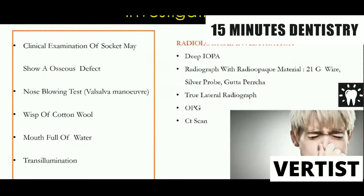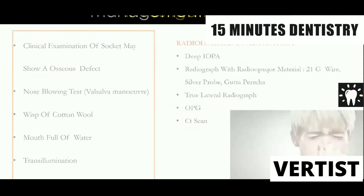How do you investigate this? On clinical examination, we look at the socket — there can be an osseous defect visible to the naked eye. Tests include the nose-blowing test, wisp of cotton-wool test, giving the patient a mouthful of water and asking them to rinse (which will come out through the nostril), and transillumination test. Radiographs include PA view, IOPA with beta-pack technique, lateral radiograph, OPG, CT scan, and in cases of chronic oro-antral fistula, a paranasal sinus view — Water's view — which will show chronic maxillary sinusitis.